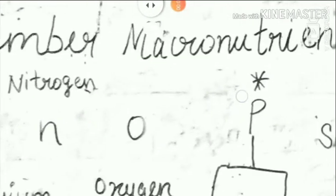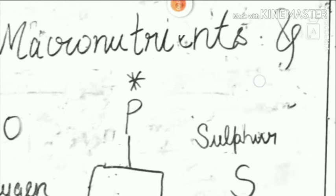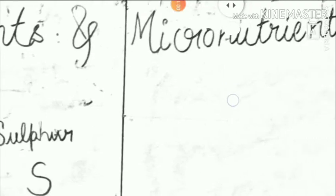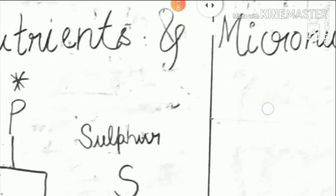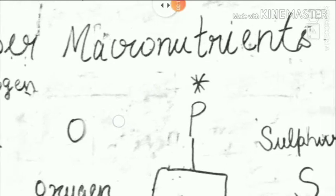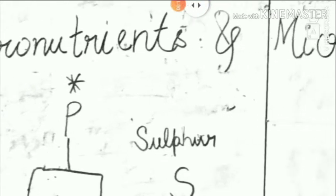So, how to memorize the names of macronutrients and micronutrients. All total we have 17 elements, out of which 9 are macro and 8 are micro elements.